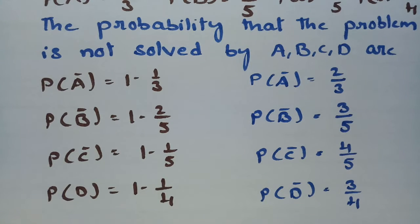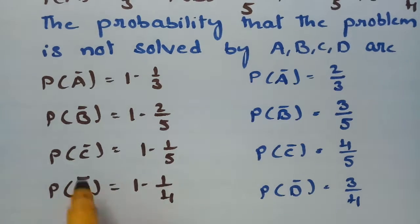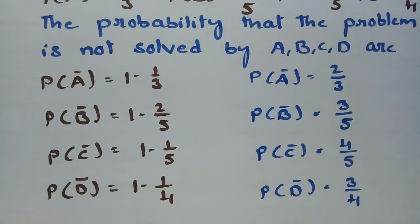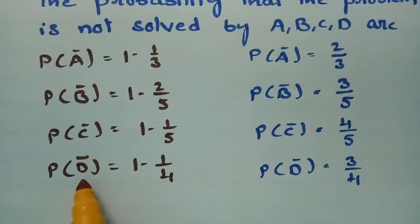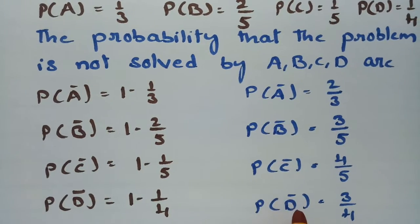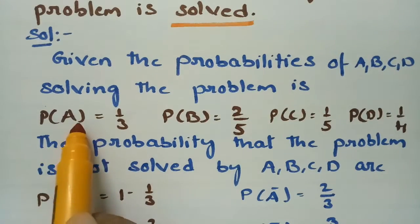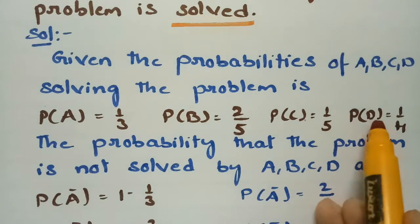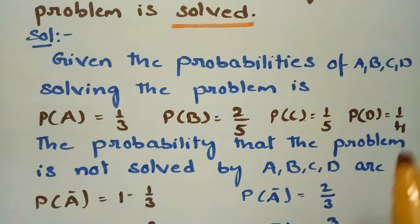The probability that the problem is not solved by D is P(D̅) = 1 − 1/4 = 3/4, since P(D) = 1/4. So all the complement probabilities are: A̅ = 2/3, B̅ = 3/5, C̅ = 4/5, and D̅ = 3/4 — these are the probabilities that A, B, C, D cannot solve the problem. The original solving probabilities are 1/3, 2/5, 1/5, and 1/4.